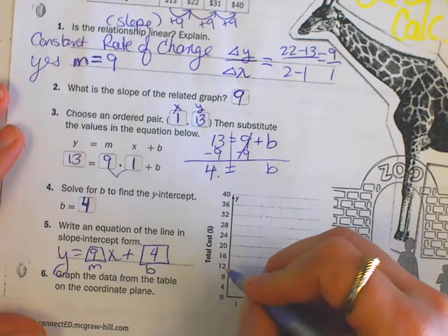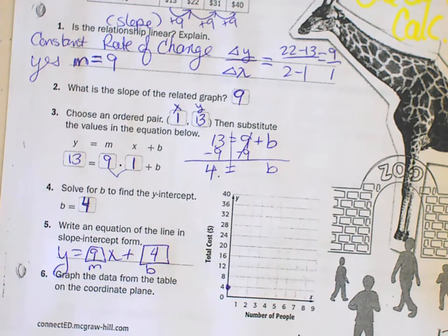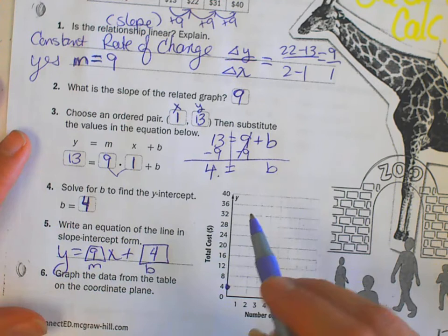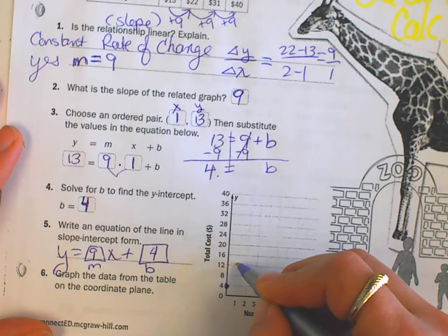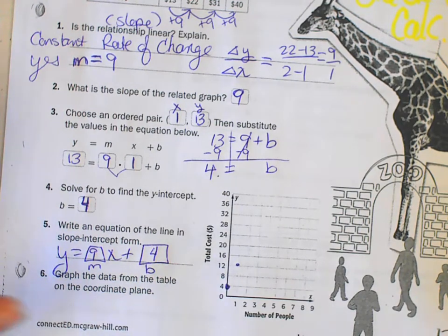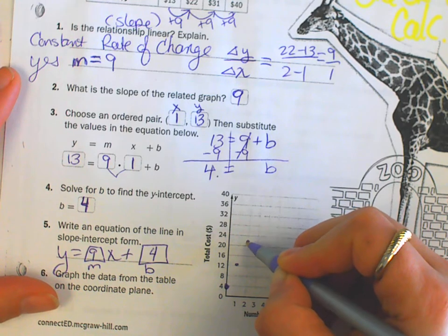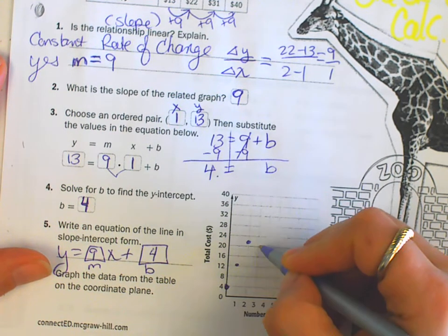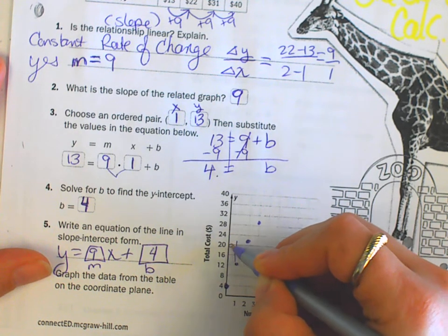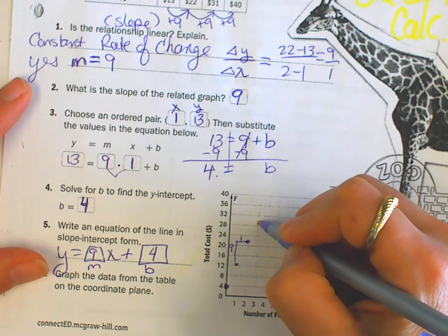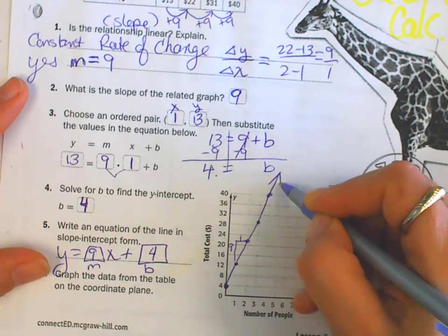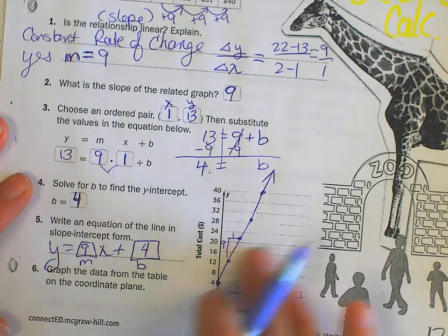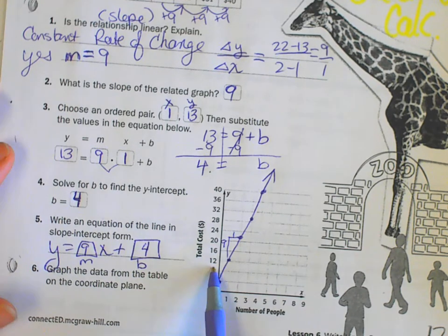And I can now graph this. Pretty darn easy using point slope. Because I know that the Y intercept is where it starts. Before any people even get into the park, it's going to cost $4. And then every extra person is $9. So we got 1, 13. The graph counts by 4. So it's a bit of an estimate here. 2, 22. Every time I'm going up 9 and right 1. That is my slope. It is my rate of change. 4, 40. That's an easy one. This does not go into negatives because there are no negative people. This graph is a quadrant 1 only graph where the X's and Y's are positive. Nobody's, no negative money, no negative people. So quadrant 1 only.